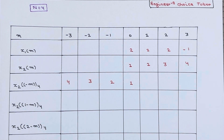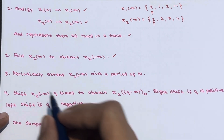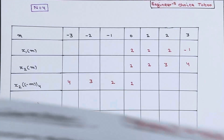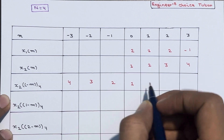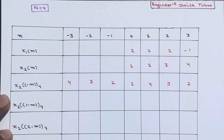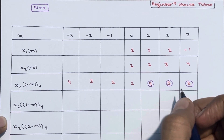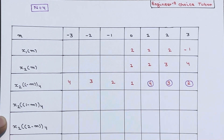Step 3: Periodically extend x2(-m) with a period of N=4. To periodically extend, the pattern 4, 3, 2, 1 repeats — so we get 4, 3, 2, 1, 4, 3, 2, 1 and so on. These numbers are the samples obtained by periodic extension.